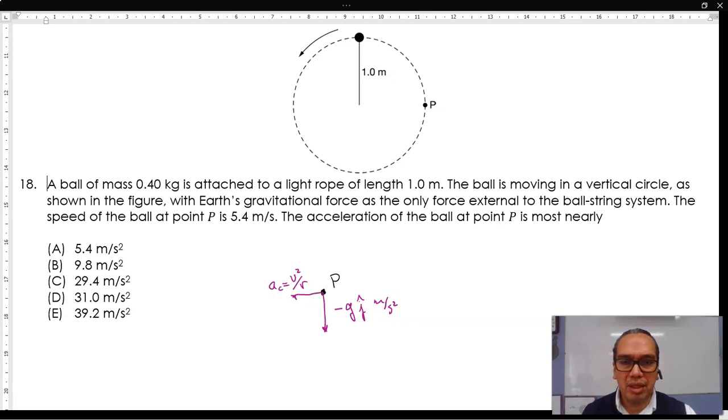That means that if you take the total acceleration of this object, you should have ac squared plus at squared, and that's equal to the square root of 5.4 meters per second squared divided by 1 meter, all of it squared, plus 9.8 meters per second squared squared.